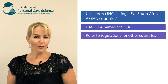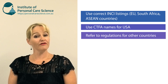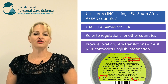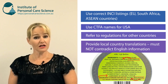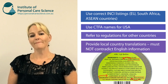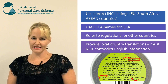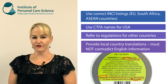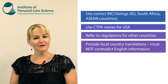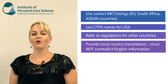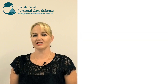Where you are preparing a label for a country other than English, the information you provide must be in the local translation but must not contradict the English translation of the ingredient list. So the information you provide must be the same whether it's in English or the local country translation.